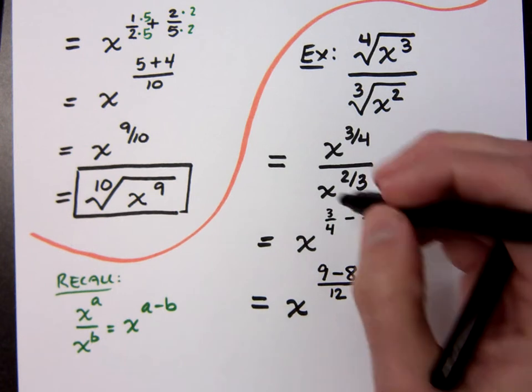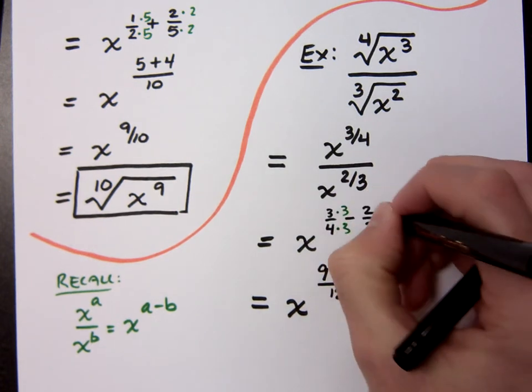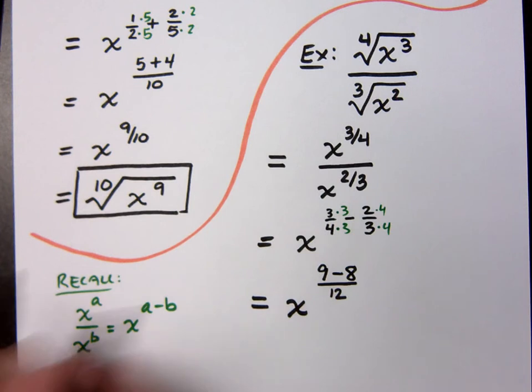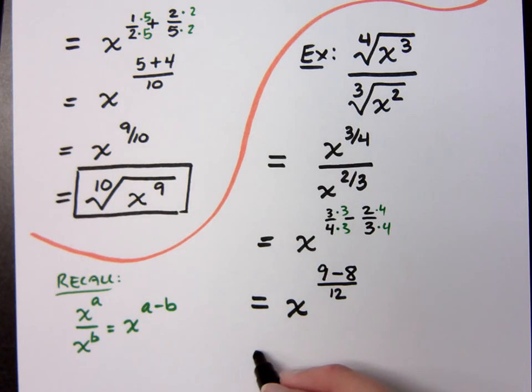How did we get that? Well, this guy was missing a factor of three. One over twelve. This guy was missing a factor of four. Which also equals two.